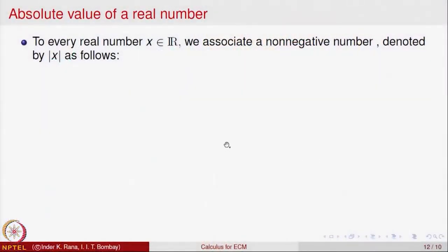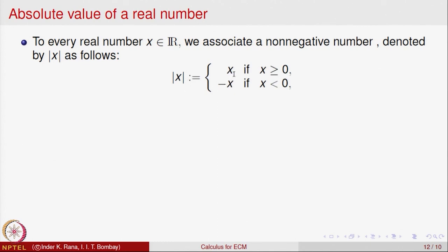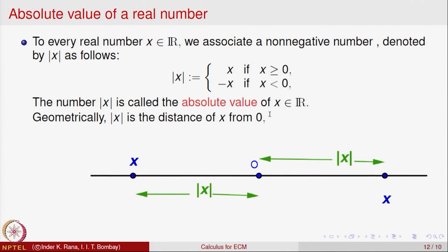How does one make it more precise mathematically — what is this number algebraically? This is called the absolute value of a real number. For every real number x we associate a non-negative number, denoted by two bars around x. It is called the absolute value of x, or modulus of x. It is defined as follows: modulus of x is defined to be x itself if x is non-negative, i.e., x ≥ 0, and it is defined as minus x if x is less than 0. So the absolute value of a number is always a non-negative quantity.